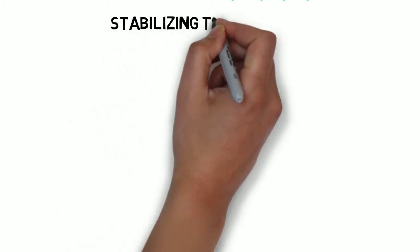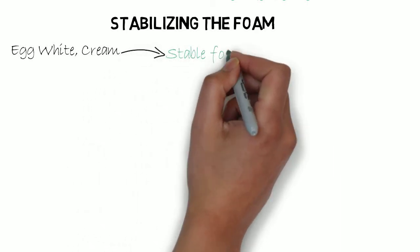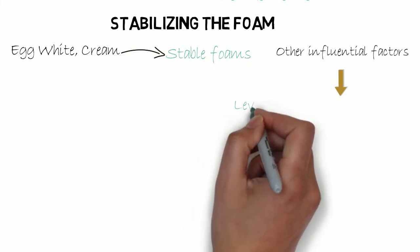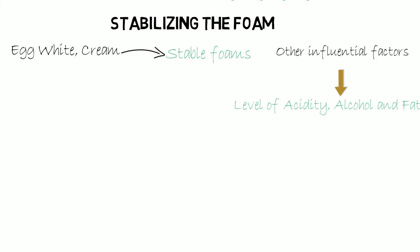Stabilizing the foam. The most traditional ingredients such as egg white or cream can be effectively used to create stable foams, but there are other things which influence the result of the final product, such as level of acidity, alcohol, and fat in the intended liquid.